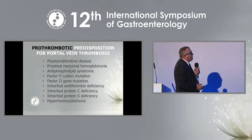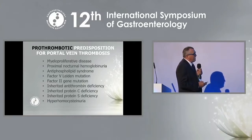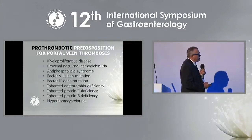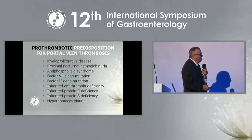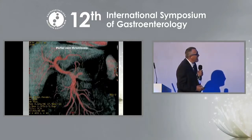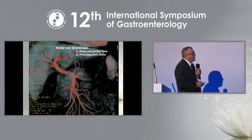Acute thrombosis is also associated with prothrombotic states, such as myeloproliferative diseases, paroxysmal nocturnal hemoglobinuria, antiphospholipid syndrome, Factor V Leiden mutation, Factor II mutation, antithrombin deficiency, protein C and S deficiency, and others. The main contributing factors are reduced portal blood flow, a procoagulant state, and endothelial injury.